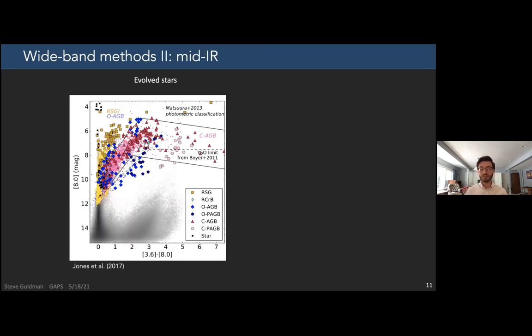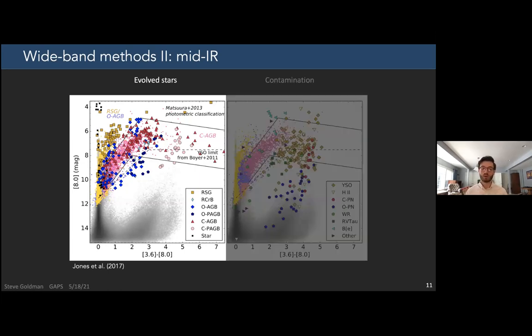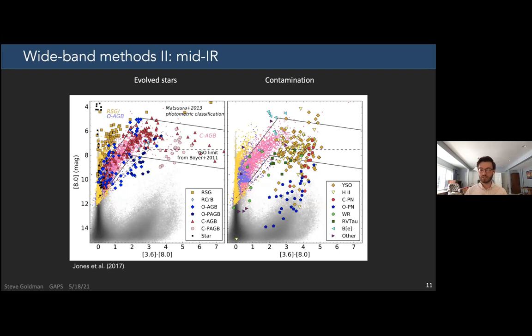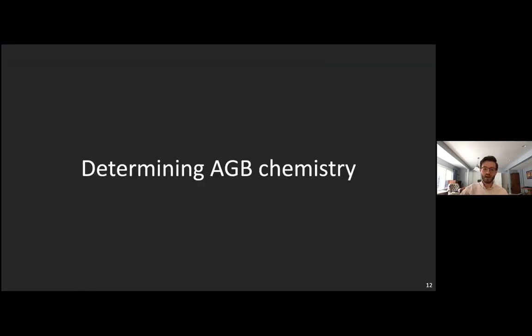This is possibly even worse in the mid-infrared where you get more cross-contamination from different stellar types of evolved stars and much more contamination from younger stellar objects or H2 regions. But it is, again, efficient.